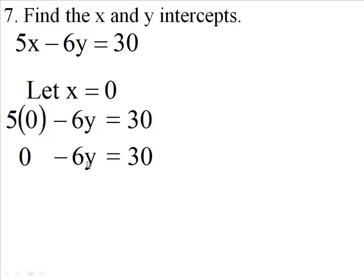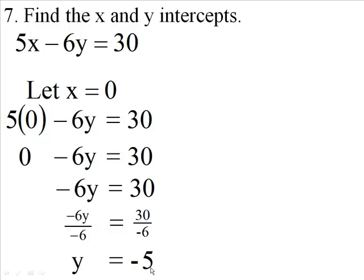So in effect, you're going to say negative 6y is 30. Then when we divide by negative 6, we get y is minus 5.